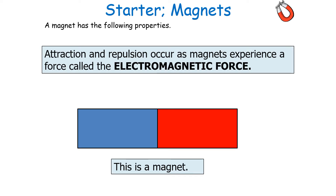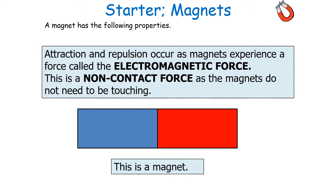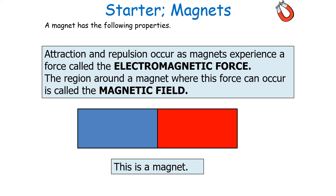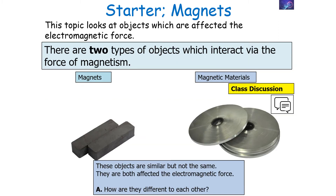Attraction and repulsion occurs as the magnets experience a force called the electromagnetic force. When two magnets are brought close to each other they exert a force on each other. This is a non-contact force, as the magnets do not need to be touching to exert a force on each other. Attraction and repulsion between two magnetic poles are examples of a non-contact force. The region around a magnet where this force can occur is called the magnetic field.